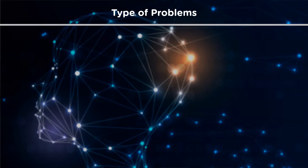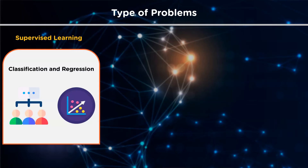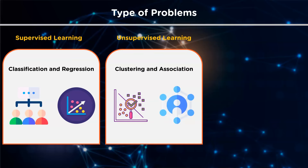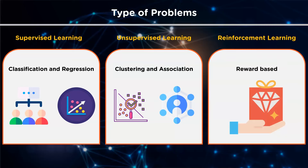Supervised learning is generally used for classification and regression problems. Unsupervised learning is used for clustering and association problems. Reinforcement learning is reward-based — for every task or step completed, the agent receives a reward, and if the task is not achieved correctly, there will be some penalty.